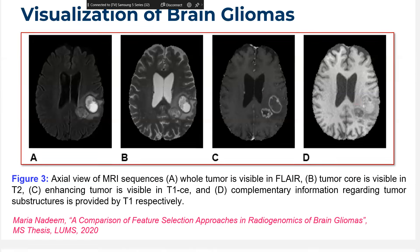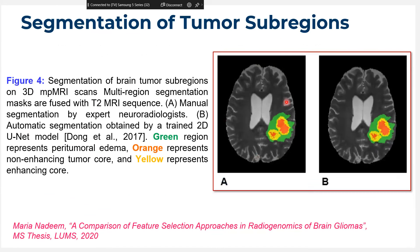When segmenting tumors, the gold standard approach is manual segmentation. We segment into three regions: the green peritumoral edema, the orange non-enhancing tumor core, and the yellow enhancing core. We also show a fully automatic segmentation using a U-Net model inspired by Dong et al. 2017. Manual segmentation is extremely time-consuming, requires expert neuro-oncologists and neuroradiologists, and cannot be crowdsourced. Fully automatic approaches obtain multi-regional segmentation maps of the tumor without these constraints.